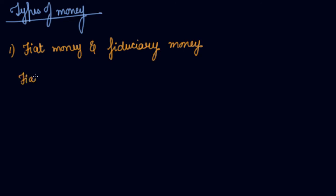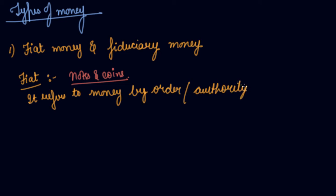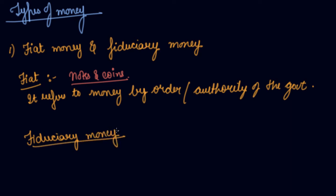Fiat money is money which is issued by order or authority of the government. You have money in the market which is issued by the government — your notes and coins are your fiat money. It refers to money issued by order or authority of the government, and it includes your notes and paper coins.